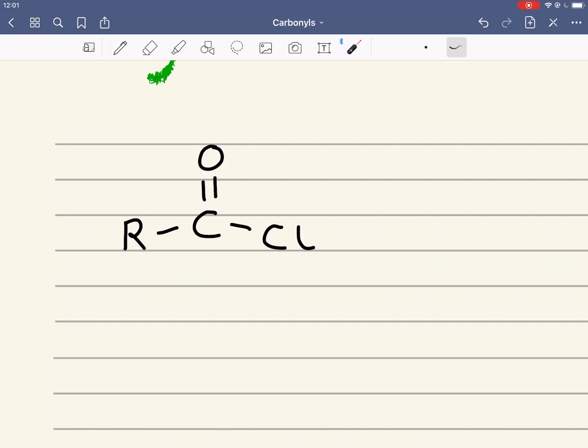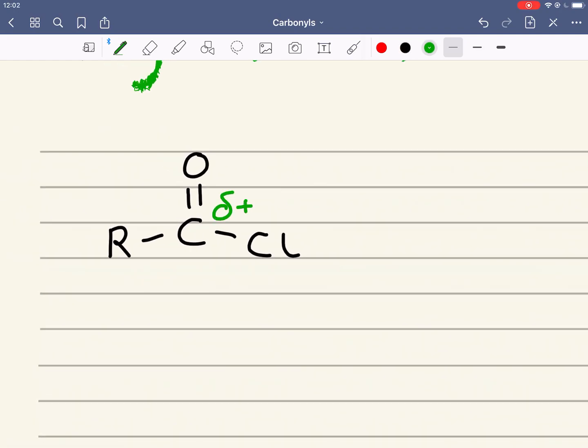Because oxygen and chlorine are more electronegative than this carbon, they will pull electron density away from the carbon and it will leave this carbon with a large delta plus, which means it's readily attacked by nucleophiles. In fact, this makes acyl chloride the most reactive of all the carbonyl groups we've studied in this topic.